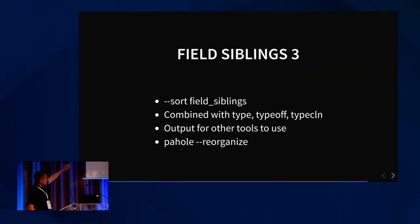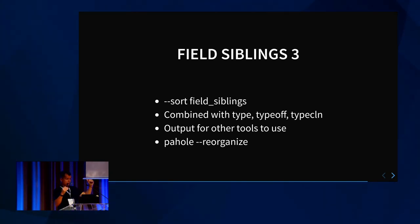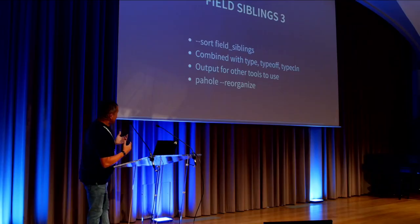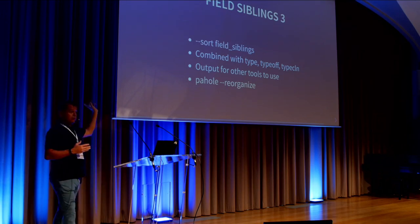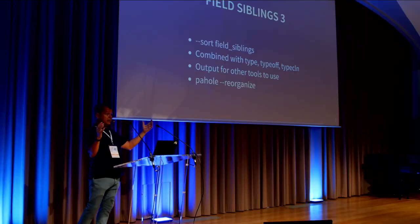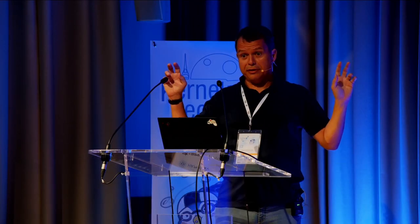We should have a sort order for these sibling assemblies, combining them with all the things, trying to find those relations. We should provide output consumable by all the tools — so Pahole's naive reorganization, now we get this information about alignment, cache line groups, etc., put it together in a solver, and reorganize in a non-naive way.